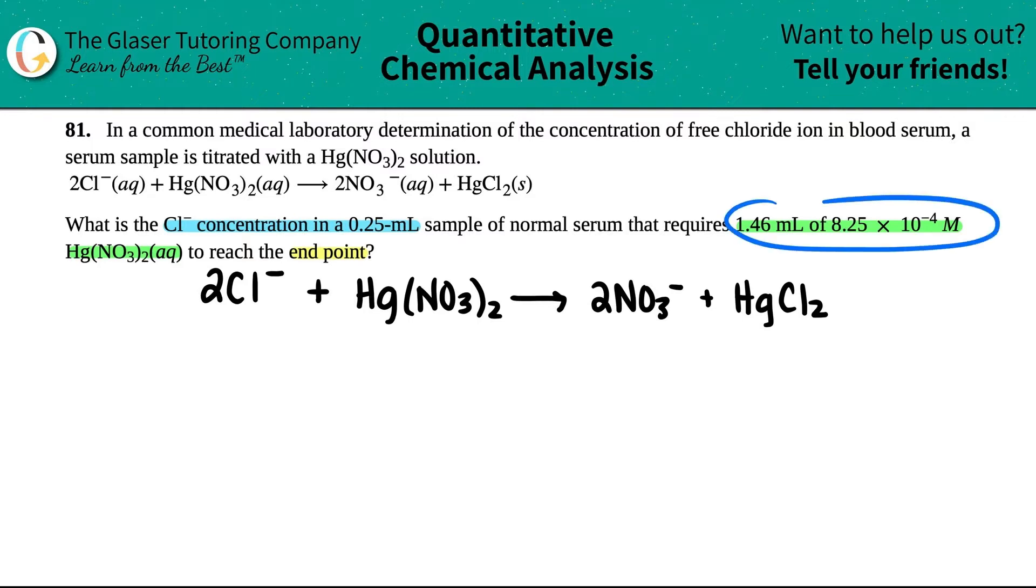They said we need 1.46 mL of 8.25 times 10 to the negative fourth molarity of this compound, which is over here. They're asking for what is the concentration of that chloride ion if we have a 0.25 mL sample of the serum. We have 0.25 mL and they're asking for the concentration. Remember concentration is just a fancy way for saying molarity. In this case, we want to find the molarity.